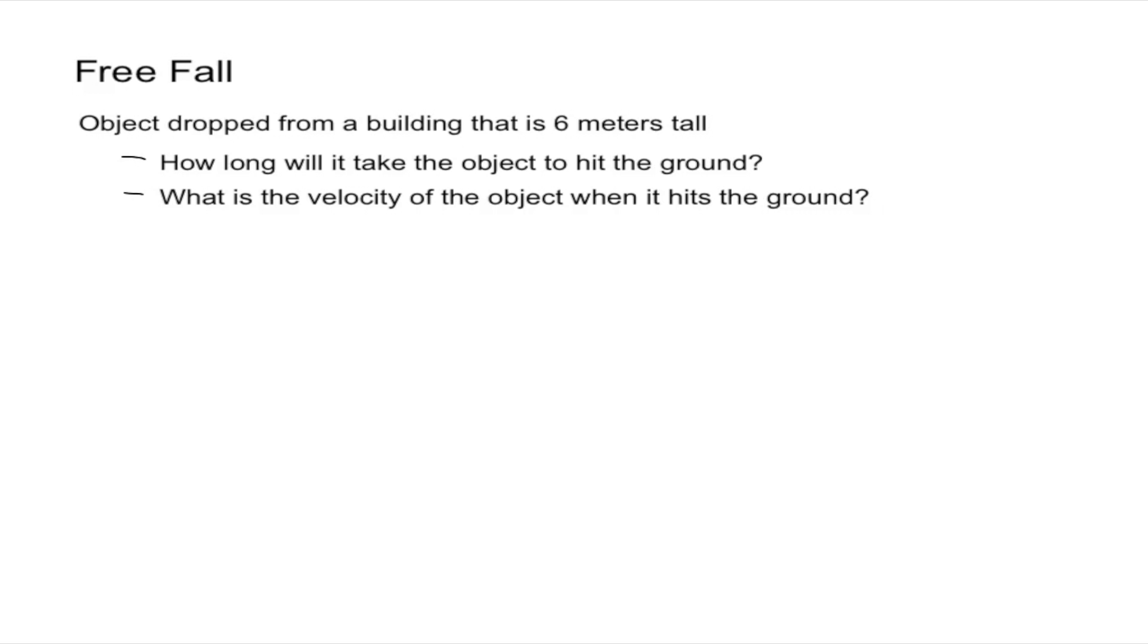So it's a fairly simple problem. It states that an object is dropped from a building that is six meters tall and there are two different questions. The first one is how long will it take the object to hit the ground and what is the velocity of the object when it hits the ground.